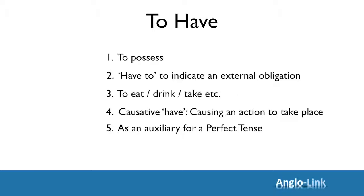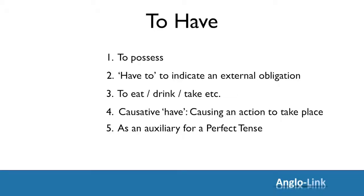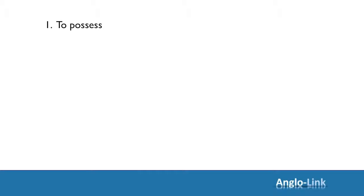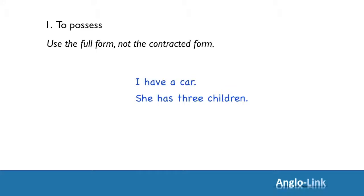So let's start with the first meaning TO POSSESS. Make sure that in this meaning, as a main verb, you use the full form, not the contracted form. For example, I have a car. She has three children. We have an idea. He had a cold.